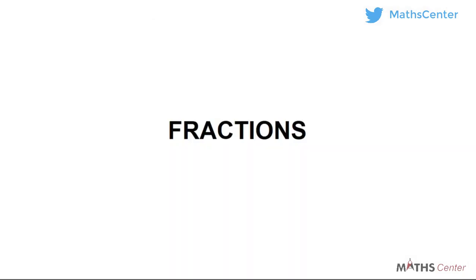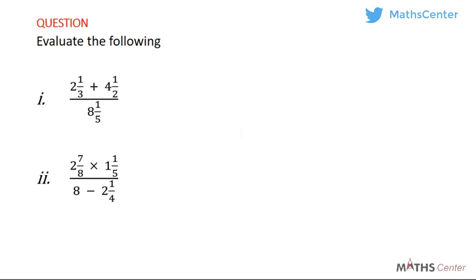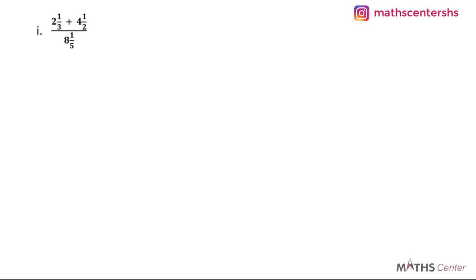In the previous video, we took questions that involve more than one operation and used the principle of BODMAS to solve those examples. In this video, we are going to take more examples on such questions. We have two questions. The first is: 2 whole number 1 over 3 plus 4 whole number 1 over 2, divided by 8 whole number 1 over 5. Whenever you have an expression like this with the division sign shown as a fraction bar, it is always easier to put the terms on top in brackets and the terms below also in brackets.